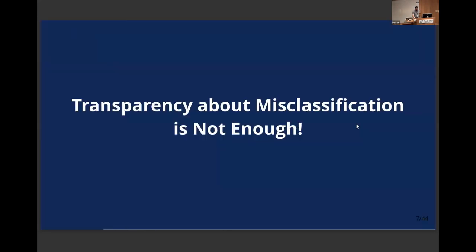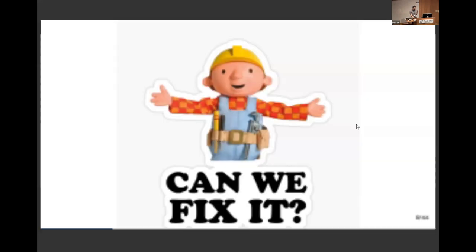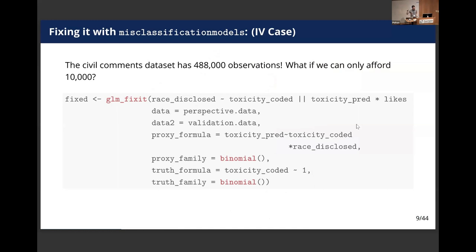So now I'm going to show you our package. The point of that example was to show that transparency about misclassification is not enough. This is a classifier used in tons of studies with an F1 score meeting normal standards, yet being transparent is not an assurance that you don't have a type 1 or type 2 error from misclassifications. So the question is: can we fix it? I say we can — and since this is the R conference, I'm going to talk about the R package first. We have a package called misclassification models.